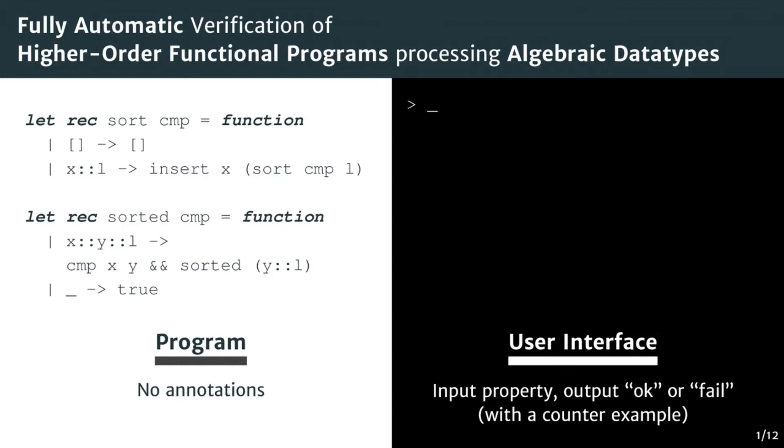The right side shows what we imagine could be the user interface. Here the user can type in the property he wants to verify. For example, we want to verify that for all list L, the output of the sort function is indeed sorted according to the corresponding predicates.